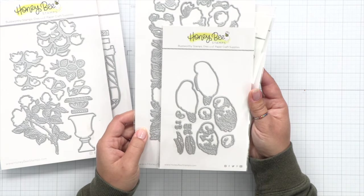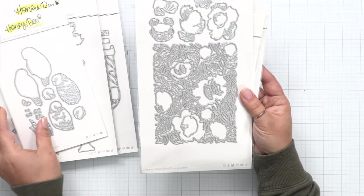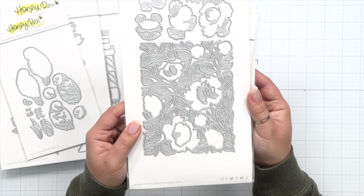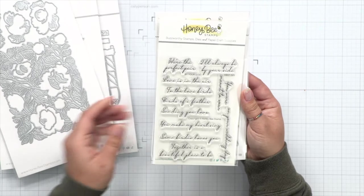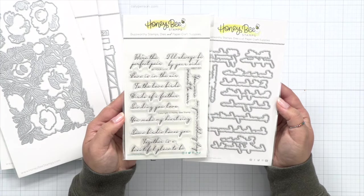And then we have the Lovely Layers Sweetheart Roses. Here are some Lovely Layers Lovebird dies. And then this final die is a Bold Backgrounds Vintage Roses die.